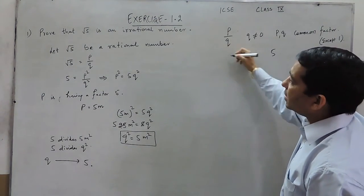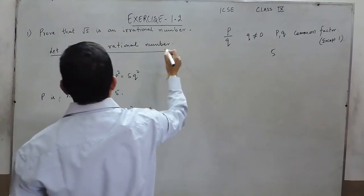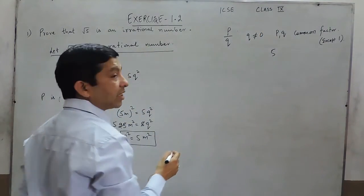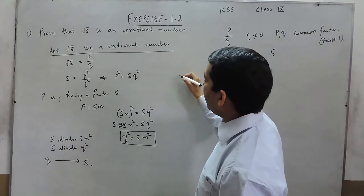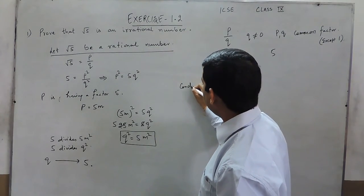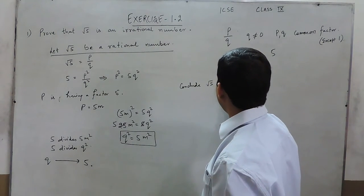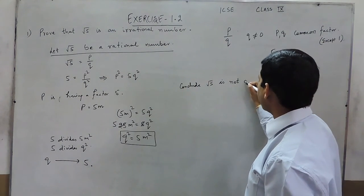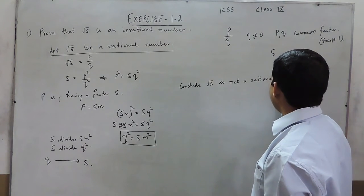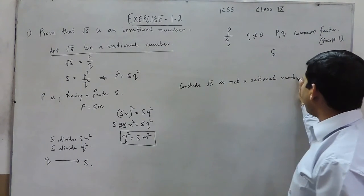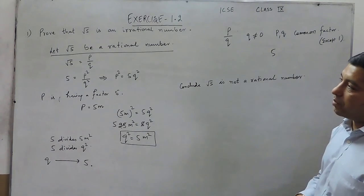It means that this supposition — which we supposed, that under root 5 is a rational number — is wrong. And when it is wrong, we can conclude that under root 5 is not a rational number, which means under root 5 is an irrational number.